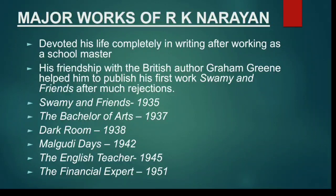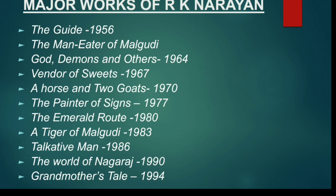His first work, 'Swami and Friends,' was published in 1935. You can see the progress of his writing throughout the years: 'The Bachelor of Arts' in 1937, 'Dark Room' in 1938, 'Malgudi Days' in 1942, 'The English Teacher' in 1947, 'The Financial Expert' in 1951, and 'The Guide' in 1956 — a very famous work for which he received the Sahitya Akademi Award, and which was also made into a major film for which he received the Filmfare Award.